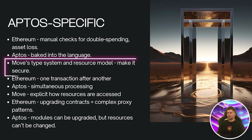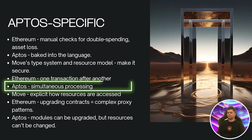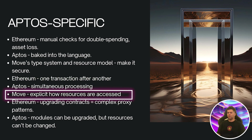Now let's talk about Aptos's parallel execution model — a big deal for scalability that also affects how you should think about contract design. In Ethereum you're used to thinking sequentially, one transaction after another. In Aptos, multiple transactions can be processed simultaneously, so you need to be mindful of how your contracts might behave when different parts are accessed concurrently. The good news is Move's ownership model helps a lot here: by being explicit about when and how resources are accessed, you're already halfway to writing parallelizable code.